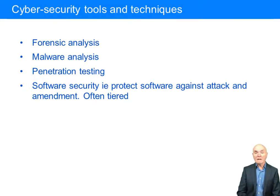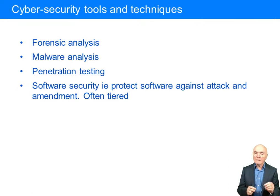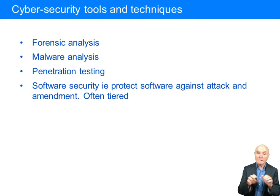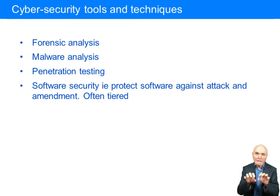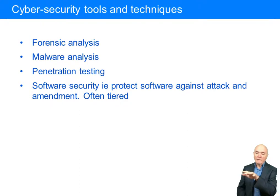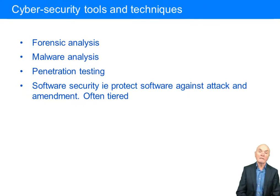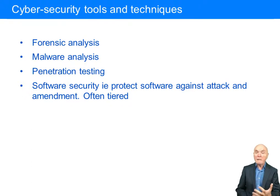Malware analysis: you find a virus. One of the things people try to do is to work backwards to see how it was made and what it does. When you find a virus it's going to be in object code — ones and zeros — which makes no sense just by looking at it. You have to reverse-engineer it to see what it looked like when somebody wrote it, and what it does. Then you can set up countermeasures against it or more easily identify it.